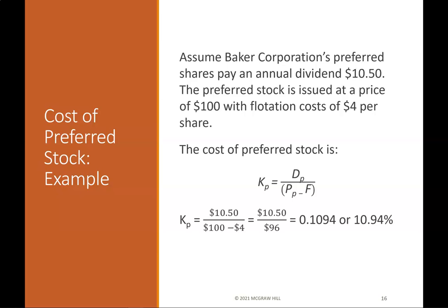Cost of preferred stock example: Assume Baker Corporation's preferred shares pay an annual dividend of $10.50. The preferred stock is issued at a price of $100 with flotation costs of $4 per share. The cost of preferred stock KP = D / (P − F) = 10.94%.